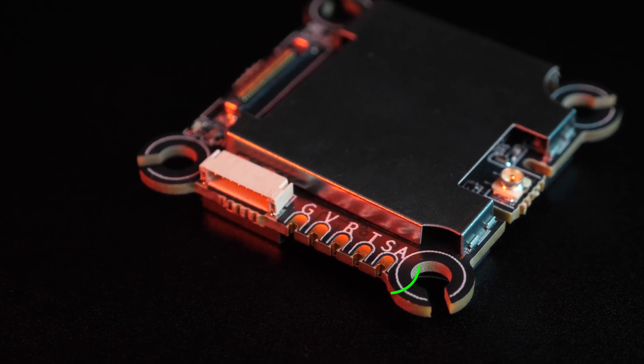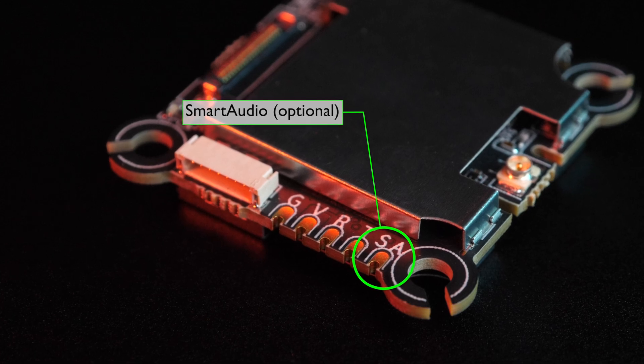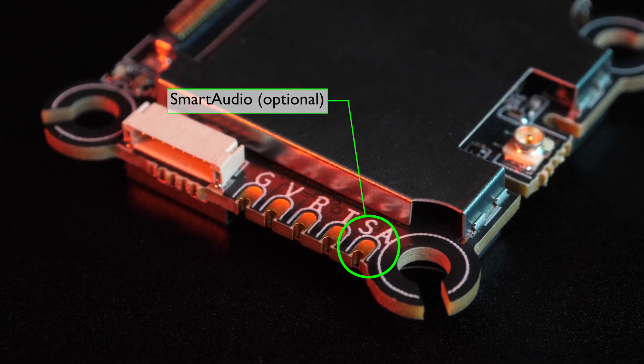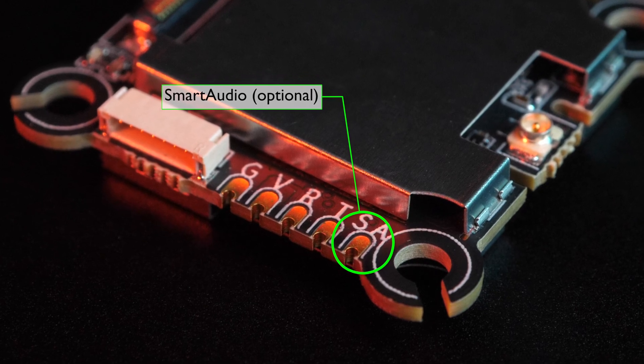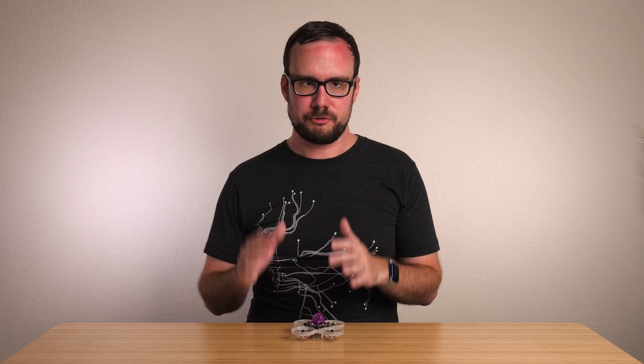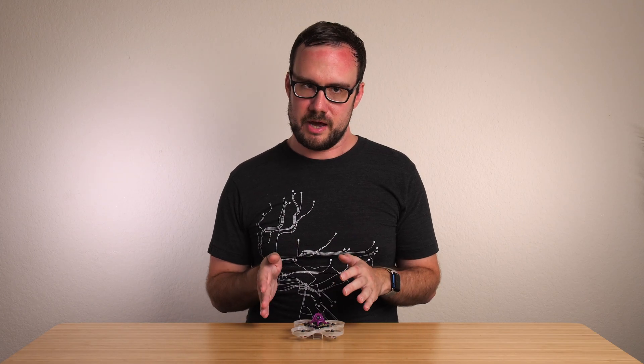One new upgrade from the Whoop VTX is that the Whoop Lite VTX includes another pad for smart audio. This is an optional pad that you can connect to a second UART on your flight controller to control the VTX with smart audio. You probably won't need that unless you want to use a switch or a script on your radio to control the VTX.